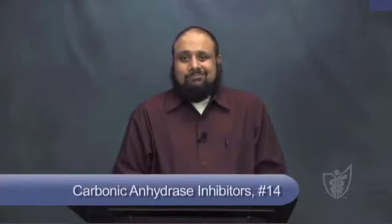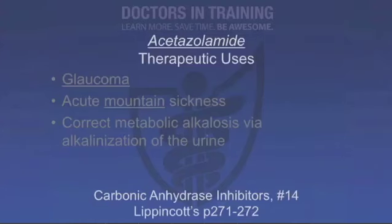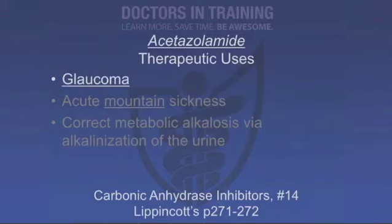If we don't use carbonic anhydrase inhibitors as diuretics, what else are they useful for? They actually have some nifty clinical uses. First, carbonic anhydrase is found in the eye, so we can use carbonic anhydrase inhibitors to treat glaucoma. We can use acetazolamide to reduce aqueous humor formation and thereby decrease intraocular pressure. It's available topically, so patients can apply it directly to the eye.